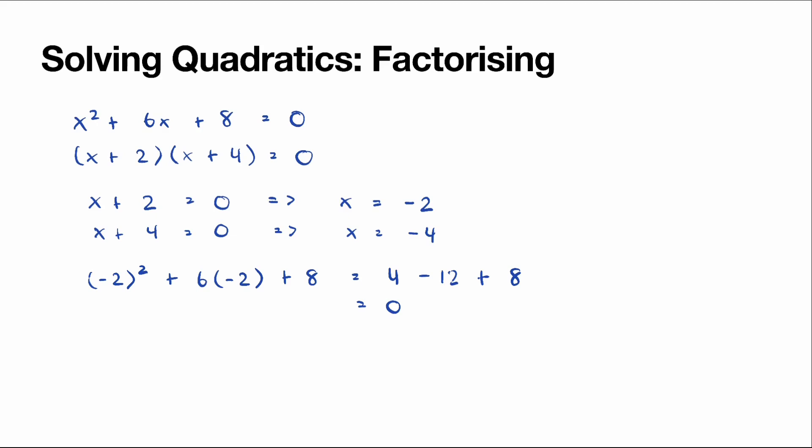Similarly, we can substitute x equals negative 4 into x squared plus 6x plus 8 and we should get the result of 0.